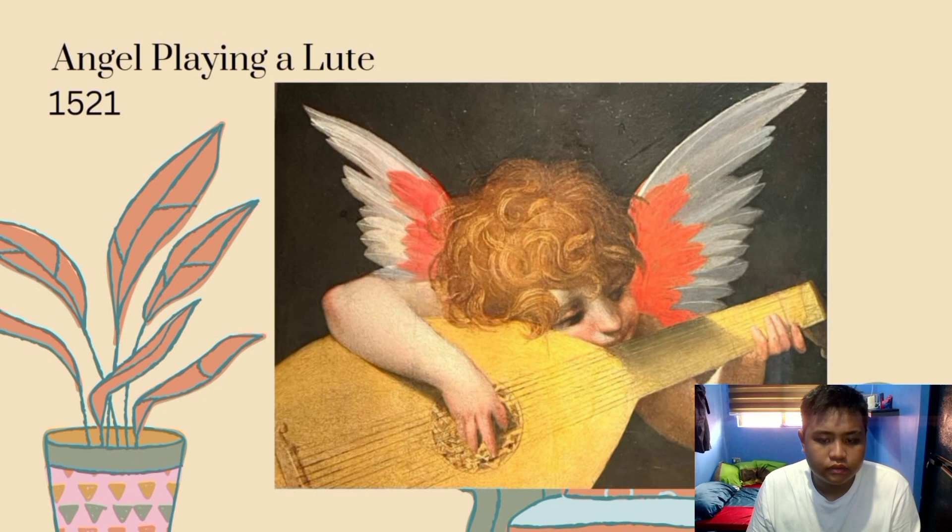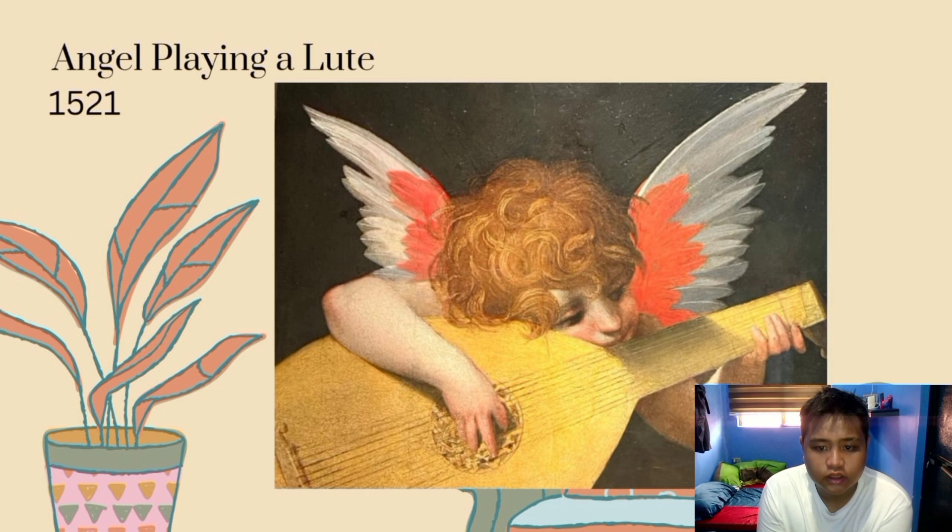Angel Playing Flute. Giovanni Battista di Jacopo (1495–1540) owed his nickname, Rosso Fiorentino, to his flaming red hair. This Florence-born artist is best known for his Descent from the Cross altarpiece, which hangs in the Pinacoteca Comunale.